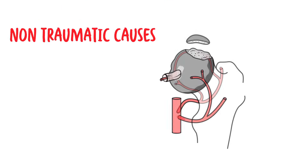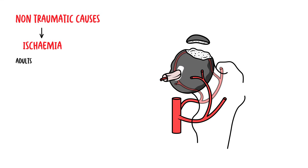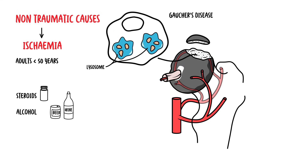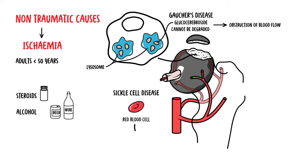Non-traumatic causes of osteonecrosis usually affect adults younger than 50 years old. Risks include steroids, either endogenous or exogenous, and significant alcohol use. In alcohol-related cases, a type of lipid called glucocerebroside cannot be adequately degraded, causing direct obstruction of blood flow. Sickle cell disease is another cause, where red blood cells undergo sickling, causing direct obstruction of blood flow and bone marrow hyperplasia, leading to osteonecrosis.